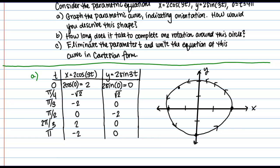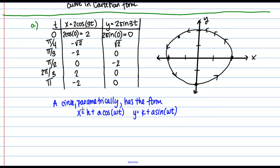So how did I know that this was going to be a circle? Well, circles have a certain form when you write them with parametric equations. And that form is the following. So the circle has a form X equals H plus A cosine of ωt, and Y equals K plus A sine of ωt. So here, the center of the circle is given by the point HK.